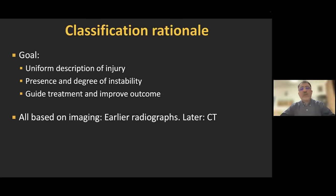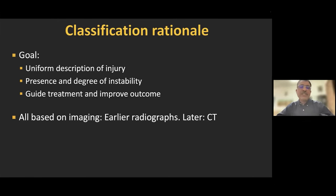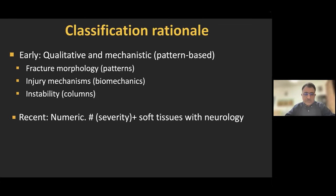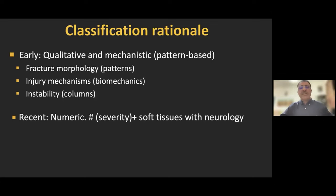The whole idea of classifying spine trauma is to unify the description of injury between radiologists and the referring team, to decide whether the spine trauma is stable or unstable, and to guide treatment and improve outcome. All spine trauma classifications are imaging-based — earlier ones were based on radiographs and later on CT. Early classification systems were more qualitative and mechanistic, describing fracture morphology patterns and injury mechanisms such as flexion, rotation, and distraction, as well as whether the fracture pattern would result in instability.